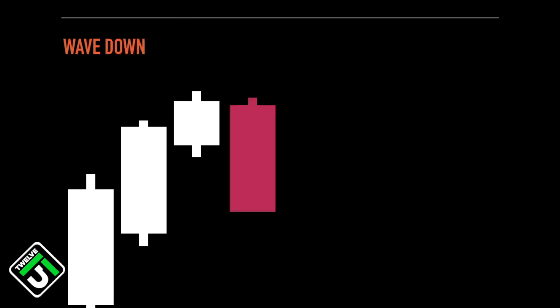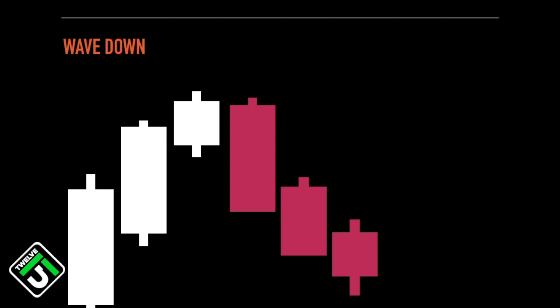Now we get the first red candle starting the downwards move — it's the first candle to make a lower high and a lower low based off the previous candle. So is now the time to buy? No, because we do not know how far this downwards wave could go. It could possibly drop all day long. In order to place a buy order, we need to be patient and wait for a new wave upwards to begin. One way to do that is to wait for the downwards candles to get smaller, showing that the downwards momentum is slowing. Once they start to get smaller, we can anticipate that this is the bottom of the downwards wave and that a new upwards wave will start to form.